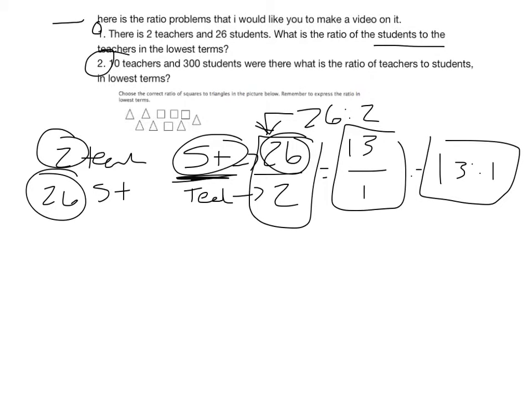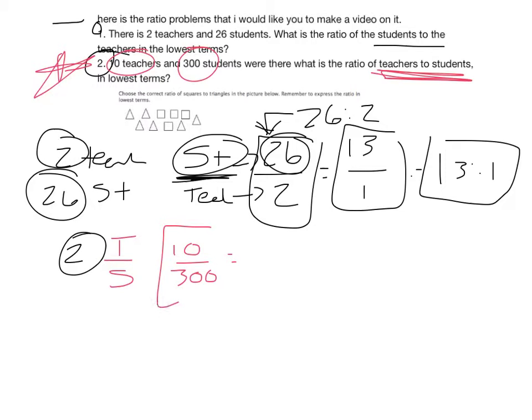Number 2 says: 10 teachers and 300 students were there. What is the ratio of teachers to students in lowest terms? This time it's teachers to students, means teachers go on top, students on bottom. We have 10 teachers over 300 students. Once we reduce it, we know 10 goes into both of those. 10 goes into 10 once, and it goes into 300 thirty times. So it's 1 to 30.